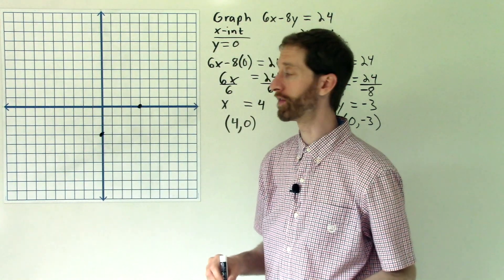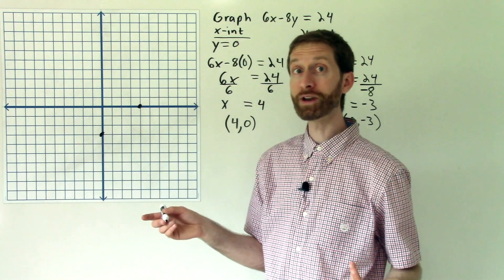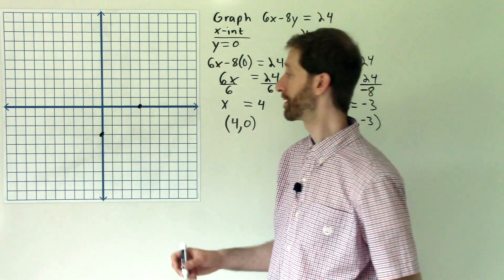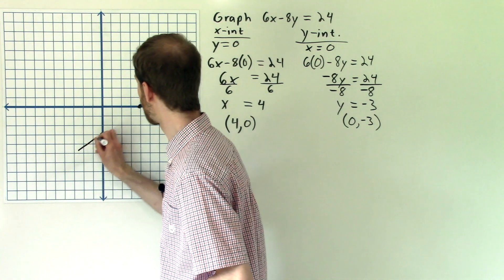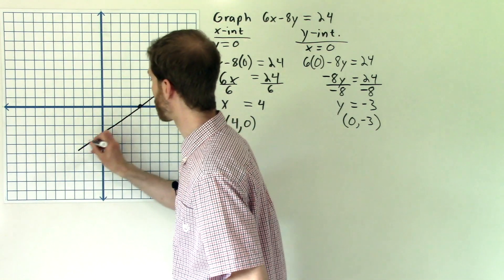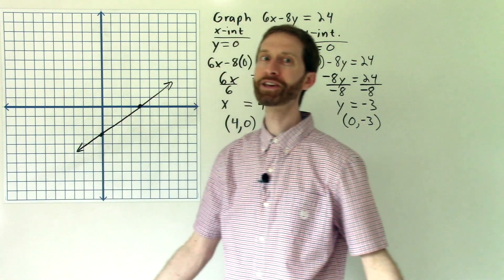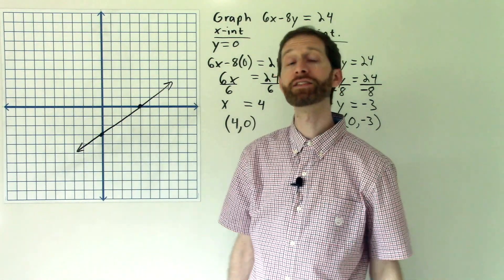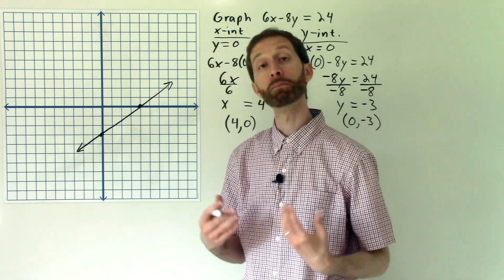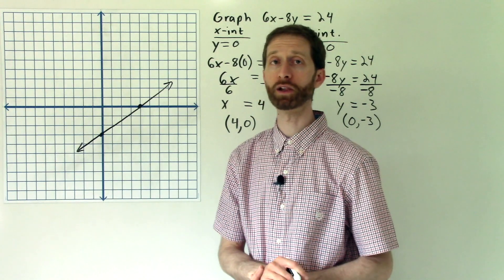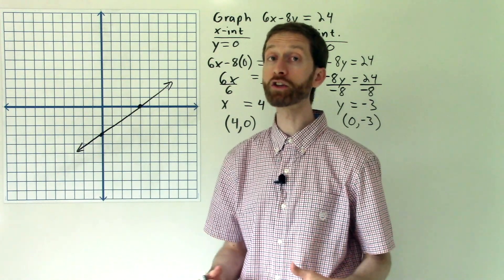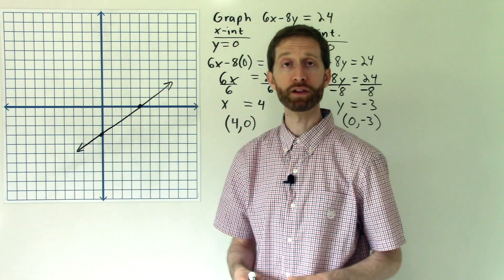So now we have two points on there and all we need to do now is connect the line that joins those two points. And that is our line. So that's it. Find the x and y-intercepts like you know how. Plot the points and you will have a line because two points determine a line. It's yet another way of how we can graph a line.